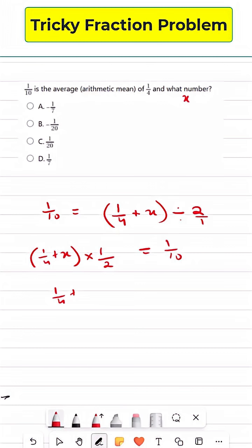So 1 out of 4 plus x is equal to... We are going to take 2 to this side so it's going to be multiplied, so it's just going to be 2 out of 10. And then we can just open this bracket here. So x just becomes 2 out of 10 minus 1 out of 4.